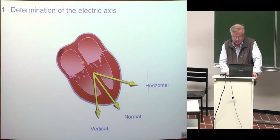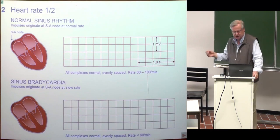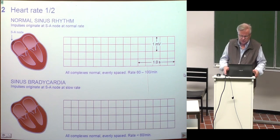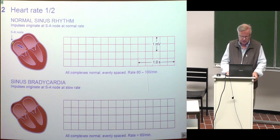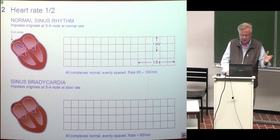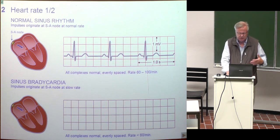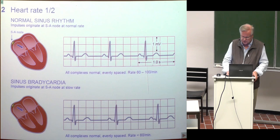Determination of the electric axis is rather simple — it allows finding how the heart is oriented: horizontal, normal, or vertical. The normal situation is called normal sinus rhythm because the impulses originate from the sinoatrial node with a normal rate, which at rest is between 60 and 100 per minute, starting from the sinus node, proceeding along the atria, going to the AV node, and along the bundle branches to the ventricles. Sinus bradycardia means the sequence is normal but the sinus node gives impulses at a lower rate, less than 60 per minute.